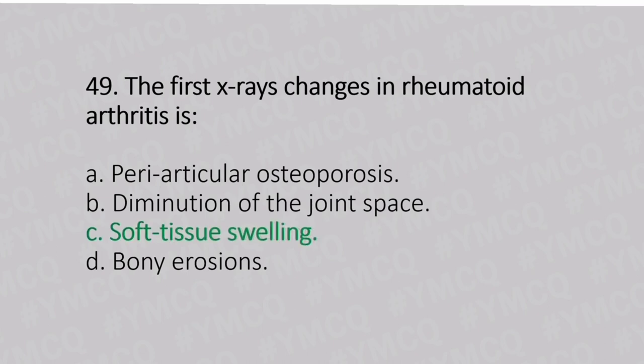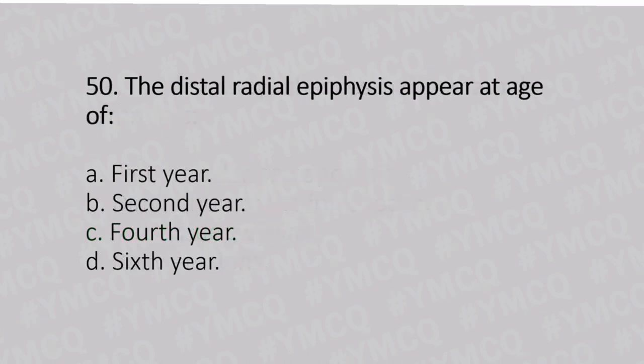Now let's move to question number 50. The distal radial epiphysis appears at the age of. Option A: first year. Option B: second year. Option C: fourth year. Option D: sixth year. And the answer is Option B, second year.